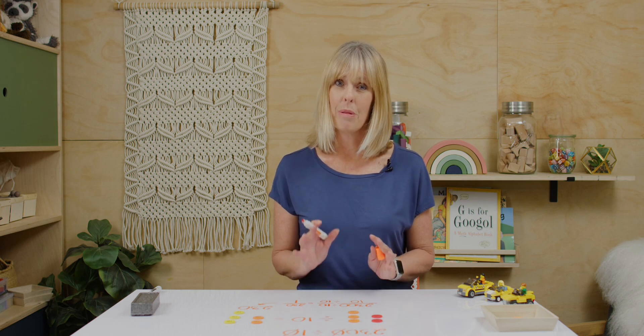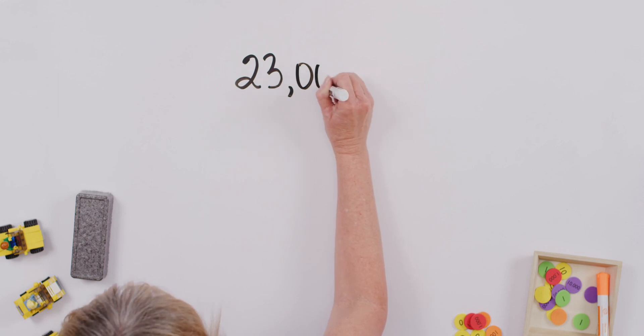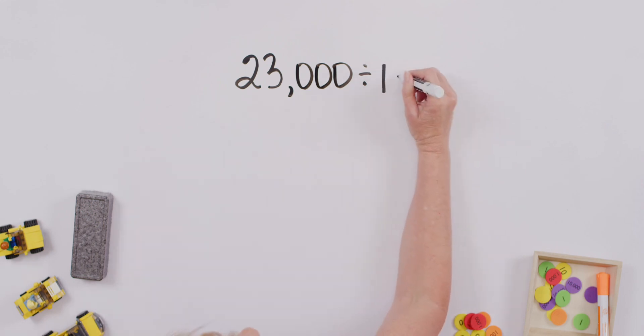Great job on that, you guys. We will continue to practice this. Let's move on to some more numbers. Our next one might feel a little bit trickier, but we're going to utilize some real similar methods here. I'm going to give us 23,000 and we're going to divide that by, how about a thousand?